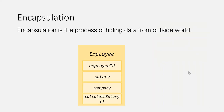Next, we have encapsulation. Encapsulation is the process of hiding data from the outside world. There might be some data in your object which you don't want to expose to the outside world. For example, the employee object has a salary property, and we don't want to expose the salary of an employee to the outside world. This salary should only be accessible from within the employee object.